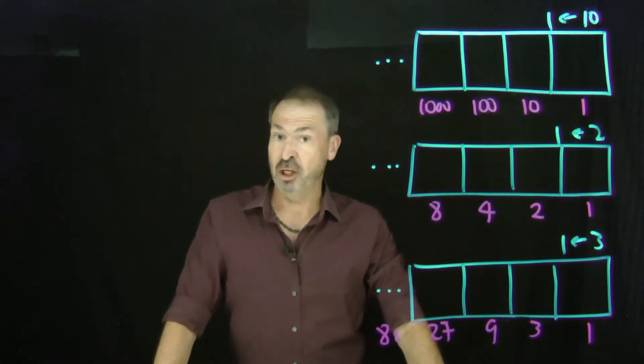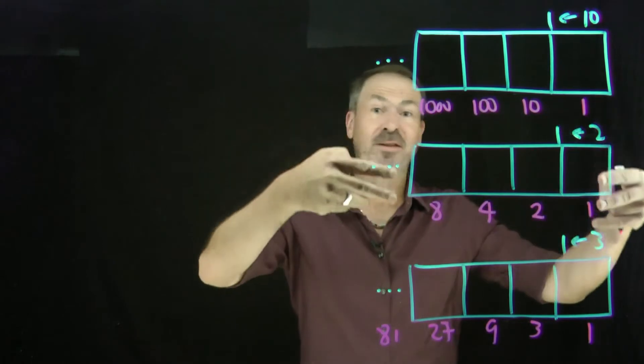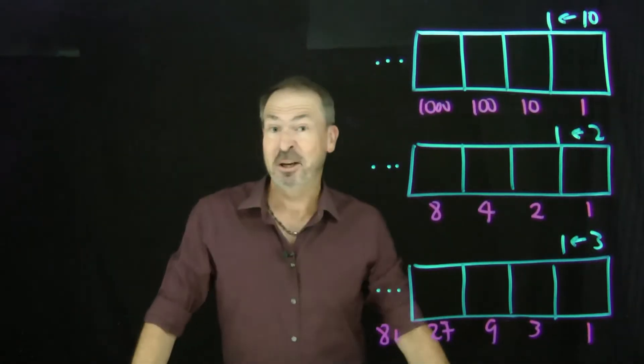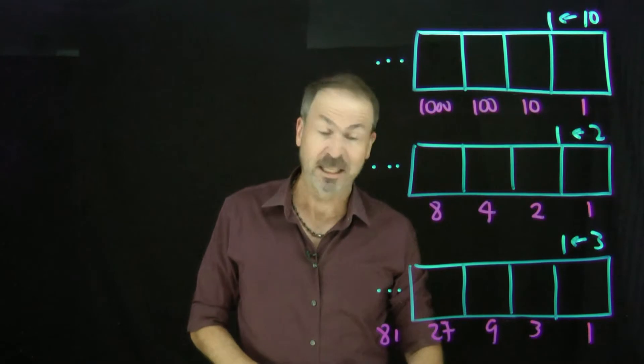Now it would be really nice to have some notation that unifies the types of numbers we're getting here for dot values. And mathematicians have such a notation—it's called exponent notation.